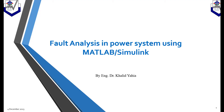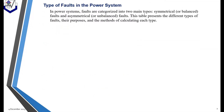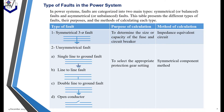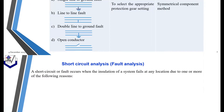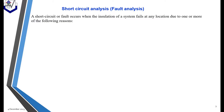Faults can lead to disturbances, equipment damage, and potential hazards. In the power system, fault analysis is mainly divided into two types: symmetrical faults and asymmetrical faults. Asymmetrical faults are further divided into single line-to-ground fault, line-to-line fault, double line-to-ground fault, and open conductor.